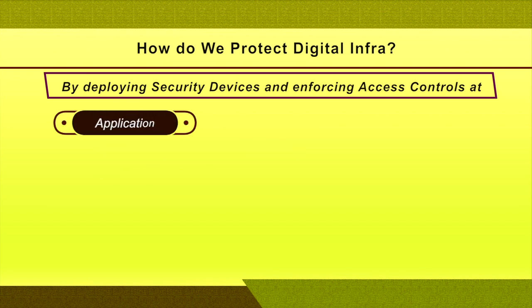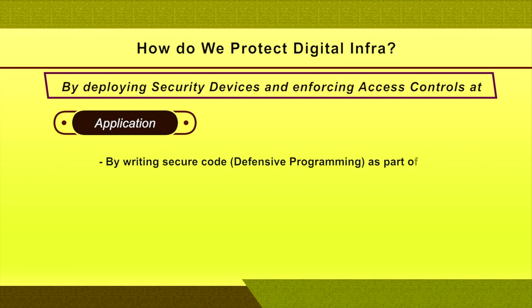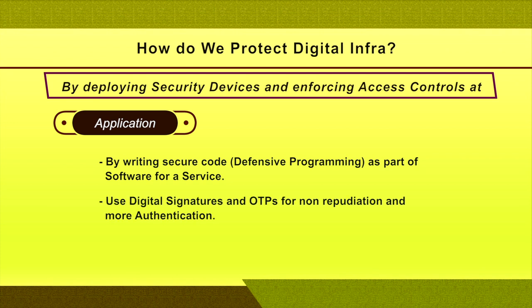At application level, protecting digital infrastructure requires writing secure code — what we call defensive programming. There will be a dedicated session on defensive programming. Protecting digital infrastructure at application level compulsorily requires secure code or secure programming. We should also use digital signatures and one-time passwords for non-repudiation and stronger authentication, and can introduce multi-level authentication.